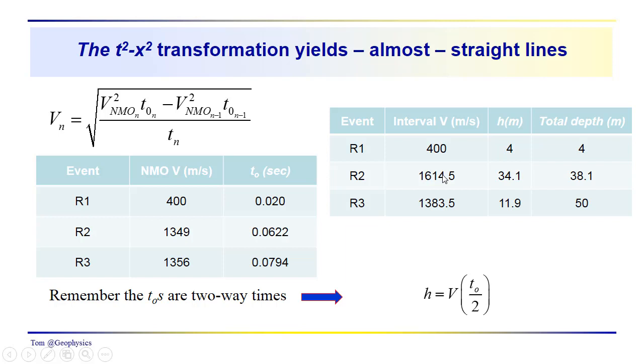We substitute into that expression, working our way down from the top to the bottom. We come up with a velocity of about 1,615 meters per second, 1,384 meters per second. And as we mentioned earlier, well this layer, between this interval between layers, between interfaces 2 and 3, is actually a lower velocity interval by a little over 100 meters, 200 meters per second.